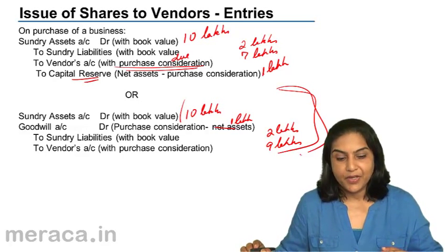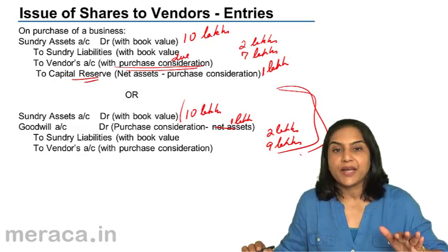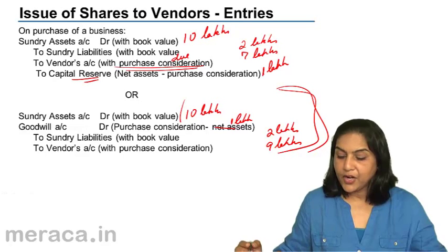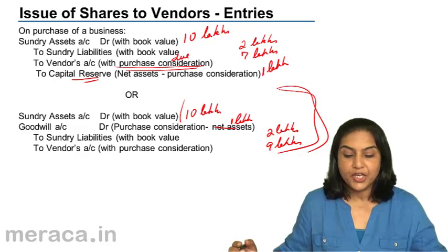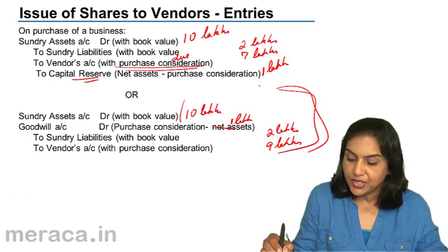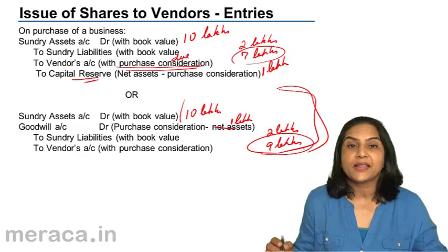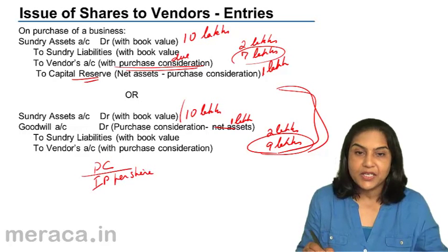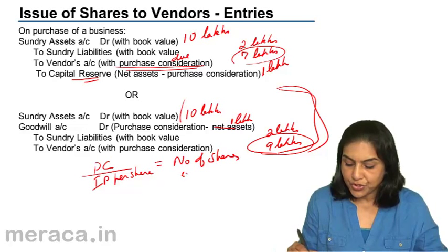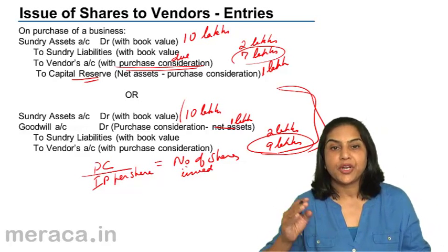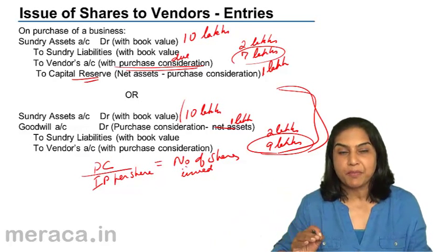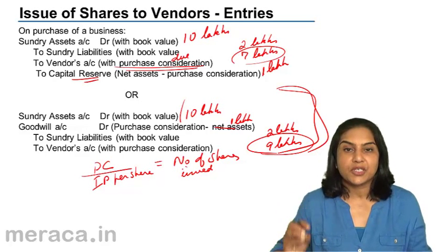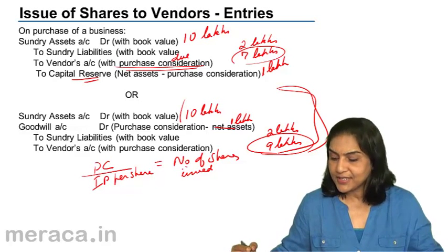In order to find the number of shares to be issued to the vendor, we divide the purchase consideration by the issue price per share — this gives the number of shares to be issued. Number of shares multiplied by face value gives us share capital. Number of shares multiplied by securities premium per share gives us the securities premium. If shares have been issued at a discount, number of shares multiplied by discount per share gives the amount of discount on issue of shares. So now let us consider an example.